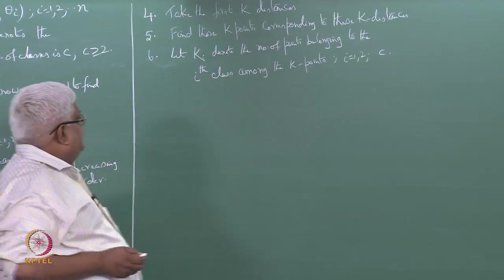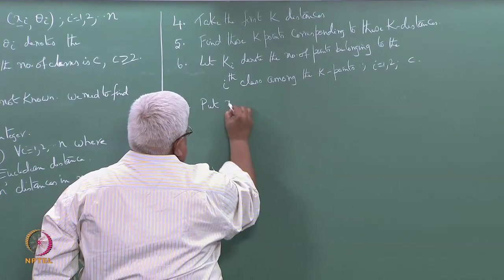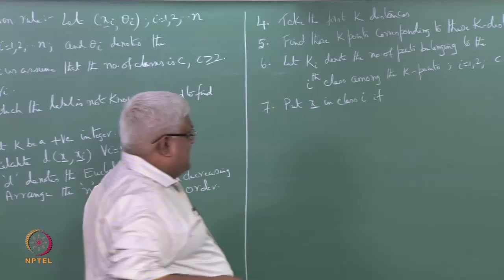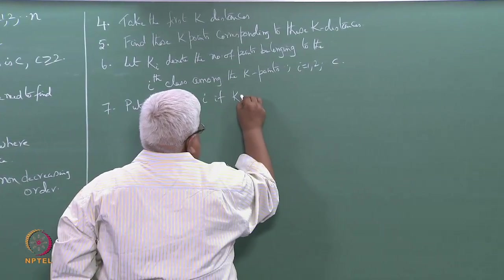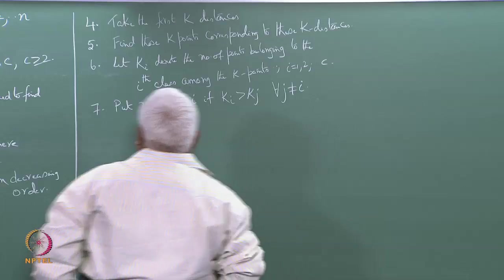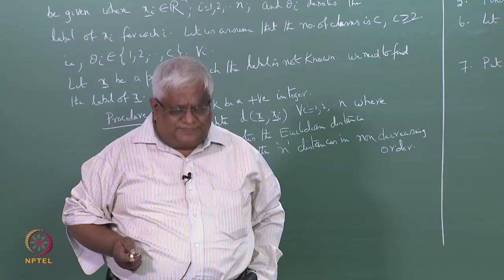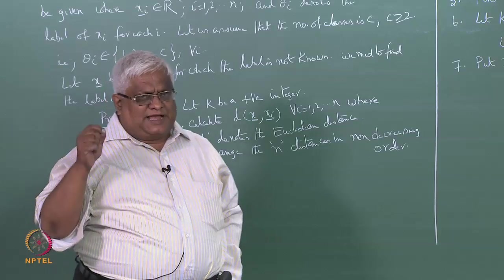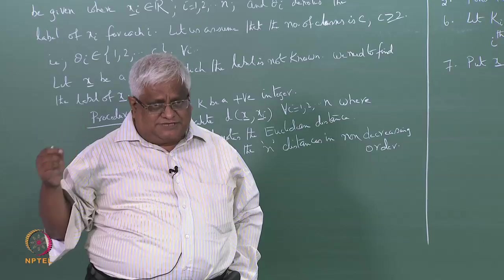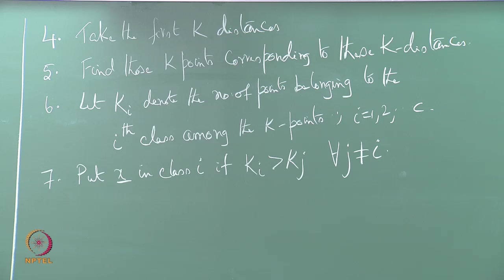The rule is: put x in class i if ki is greater than kj for all j not equal to i. That means put x into the class which has the maximum number of members among these k nearest neighbors. This is the rule.